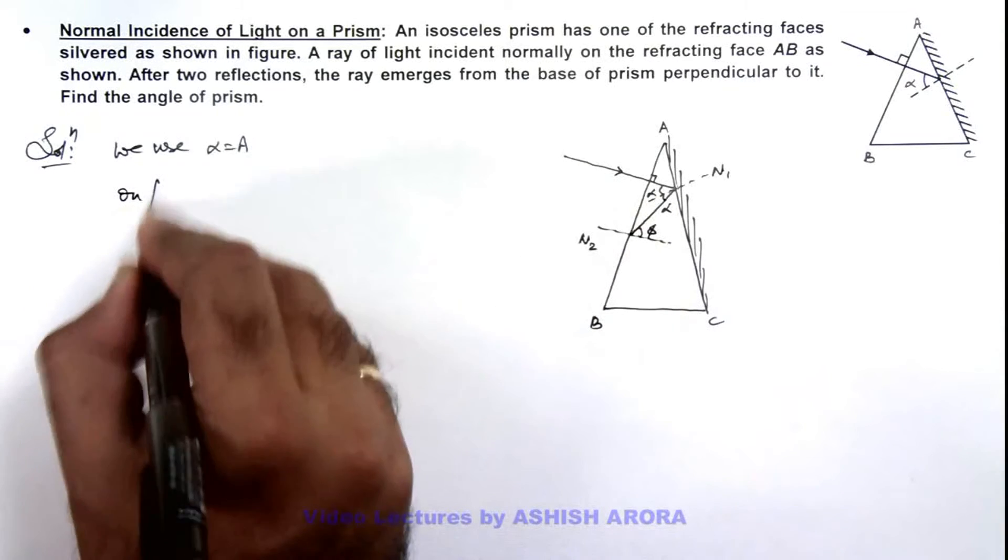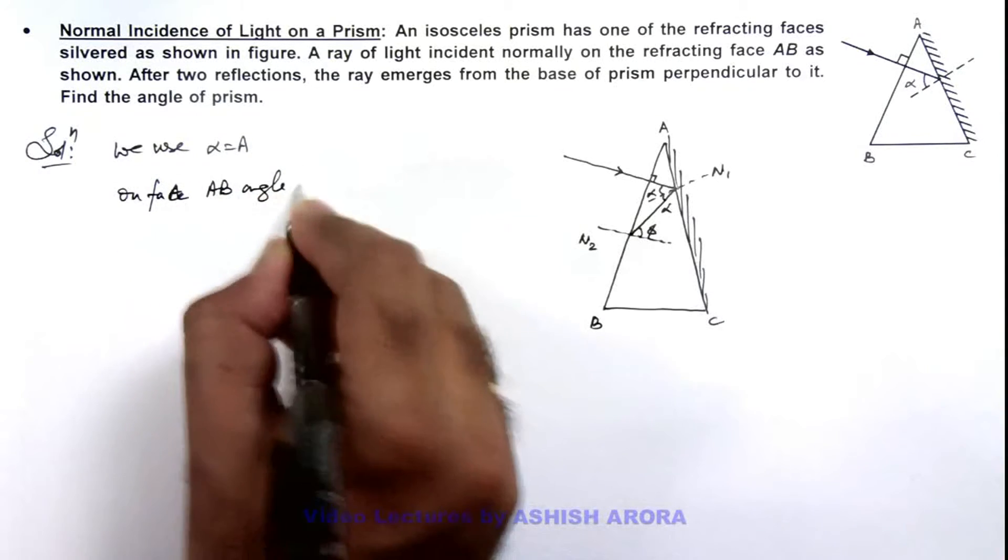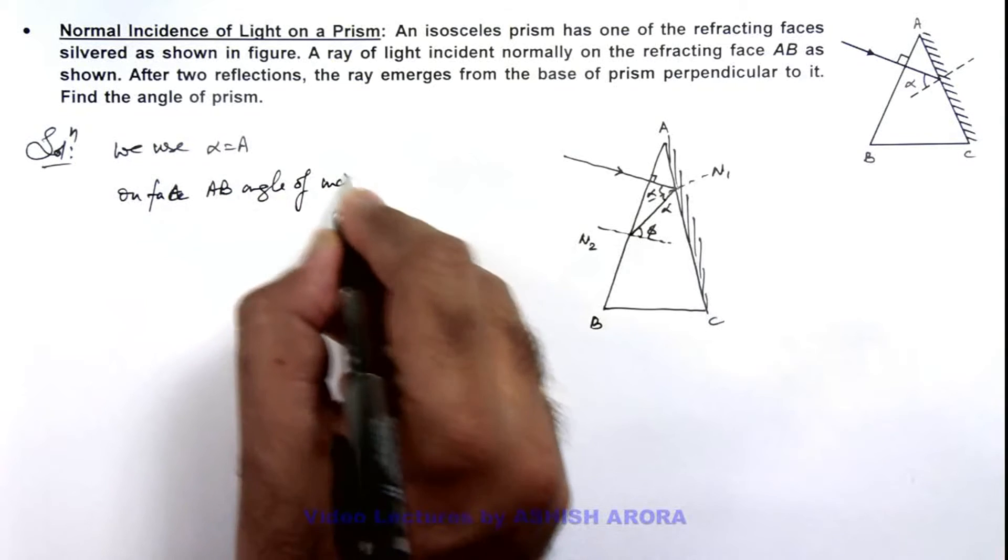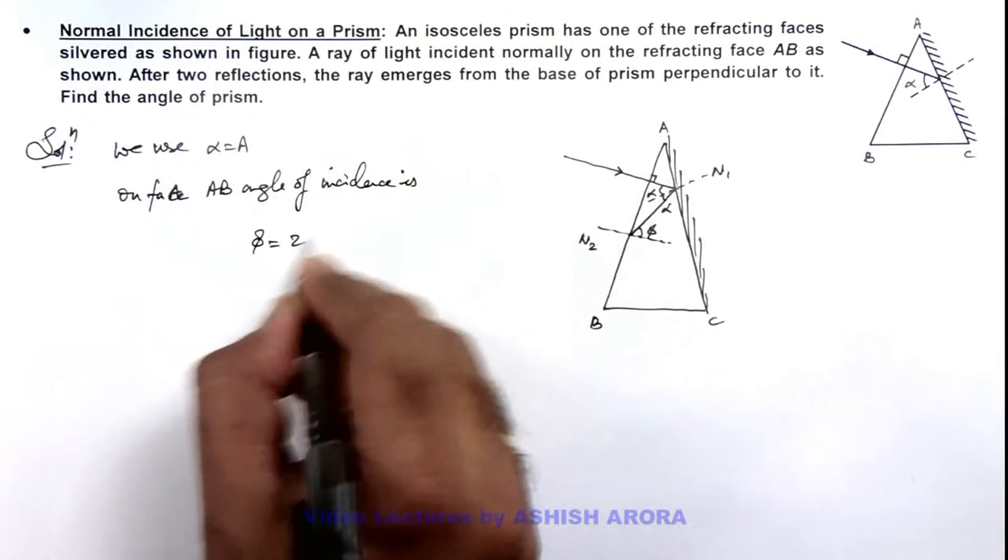On face AB, the angle of incidence is phi and this can be written as 2 alpha.